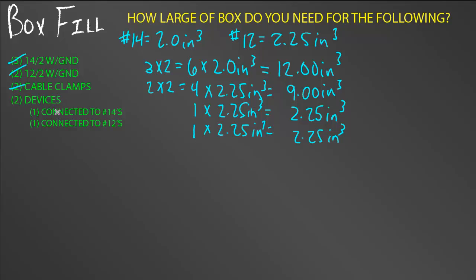Well, here's where it gets a little bit more complicated. I have two devices and each device is connected to a different size wire. So, let's deal with the 14 device. I have one device and we know it's two wires. So, that equals two wires times the number 14 cubic inch which is two and that equals four cubic inch. Am I done with that one? Sure. Now, I have a device connected to number 12. So, I have one device times two wires that equals two wires times two point two five cubic inch which is 4.5 cubic inch. So, now I'm done with my devices.